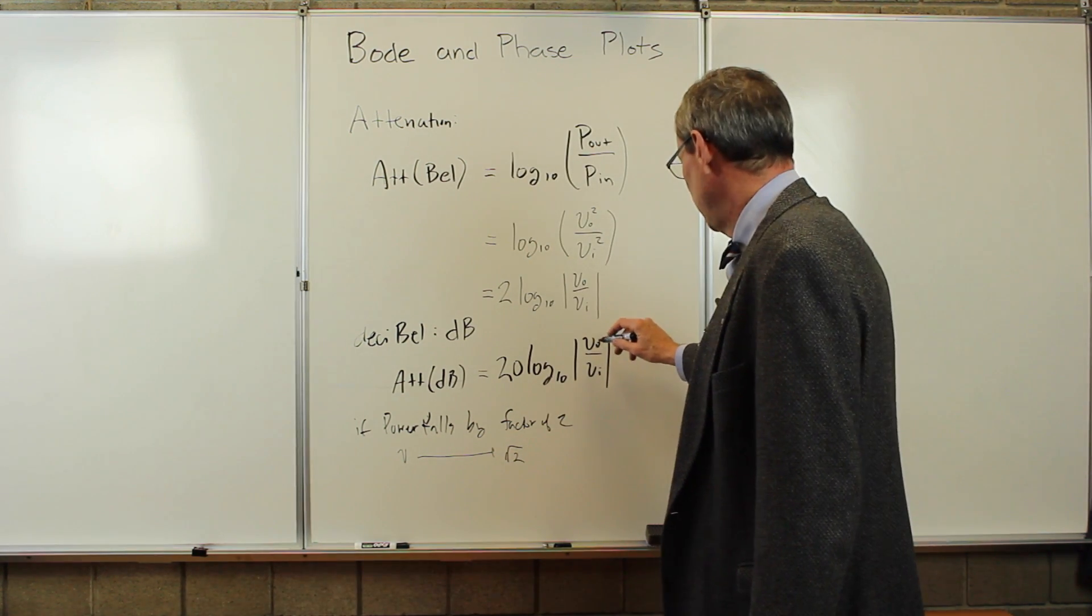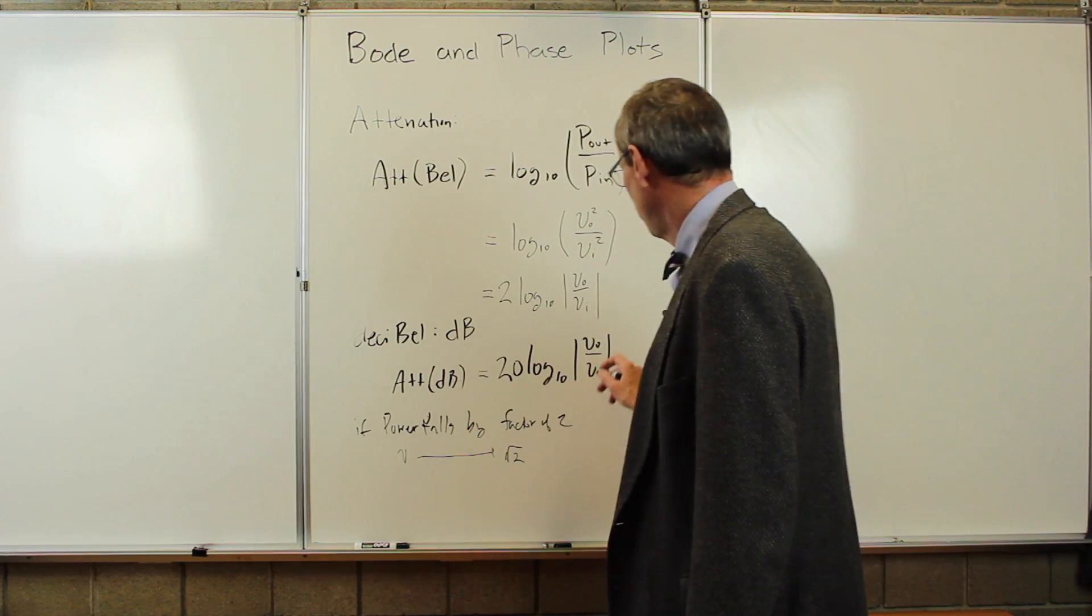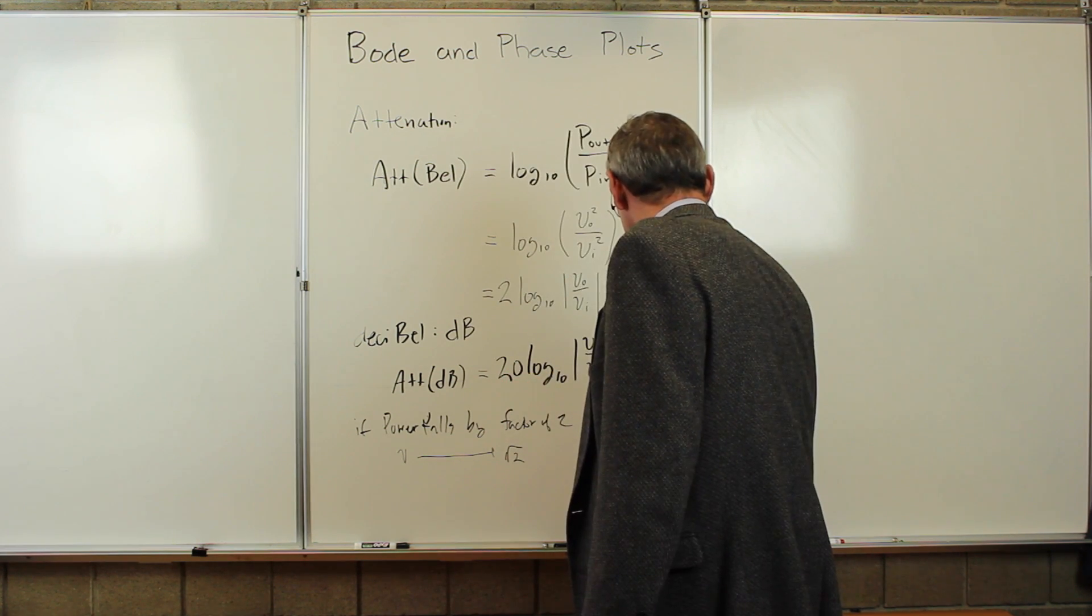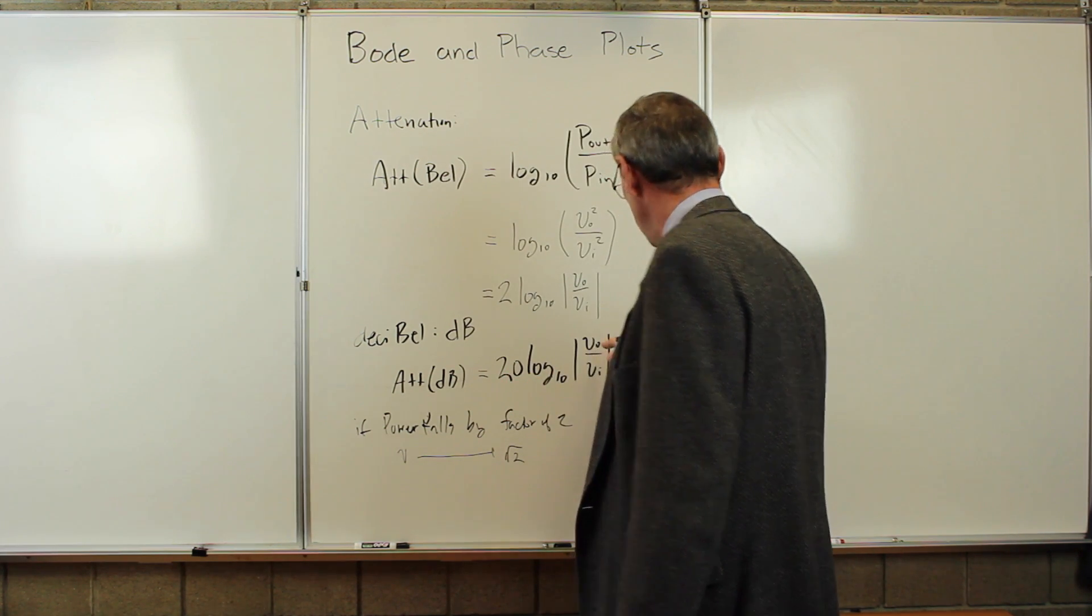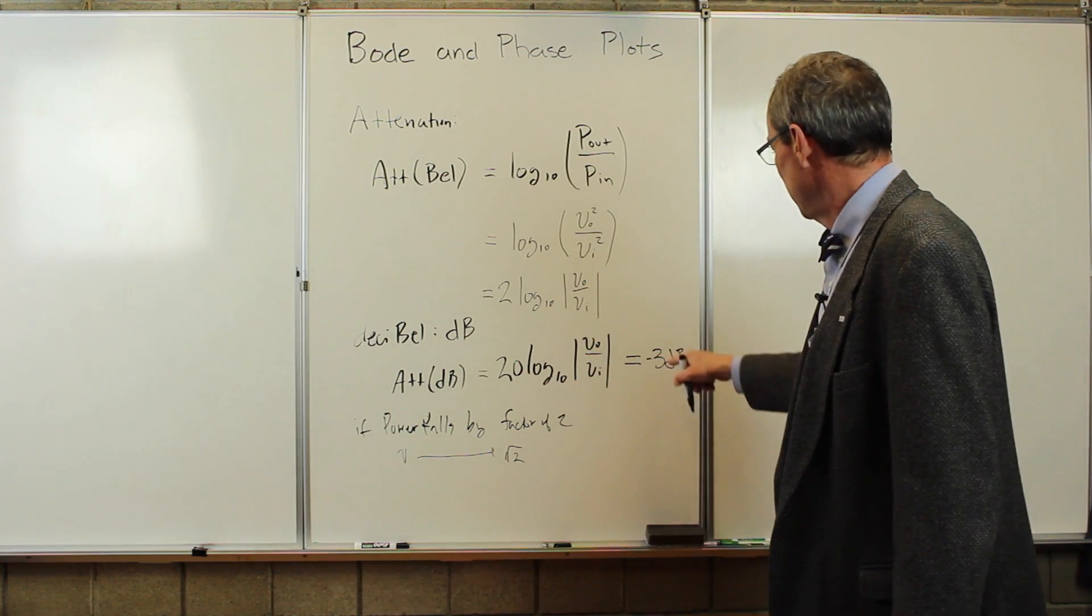And basically, if this falls by a factor of square root of two, so this is one over the square root of two. So when the power falls by two, this is minus three dB. If we multiply it out, put one over square root of two in here, take the log, multiply it by twenty, we get minus three dB.